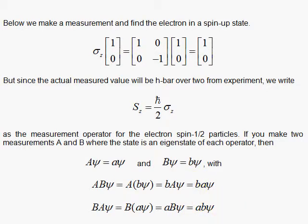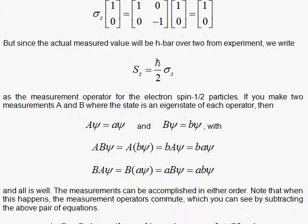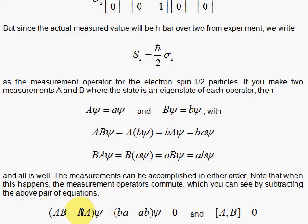So, therefore, if you subtract those equations, you get zero, which means that the operators must commute. The operator A times the operator B minus the operator B times the operator A must vanish, and that's the definition of the commutator. So, when you have an eigenstate for two operators, those operators will commute.